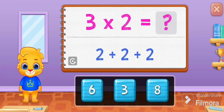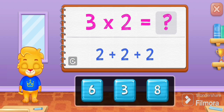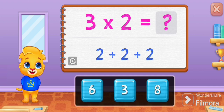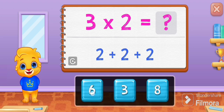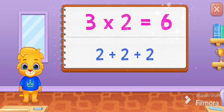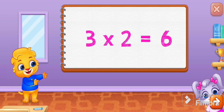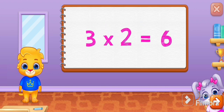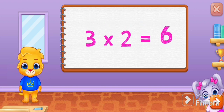Three times two equals two plus two plus two. Six! Three times two equals six.